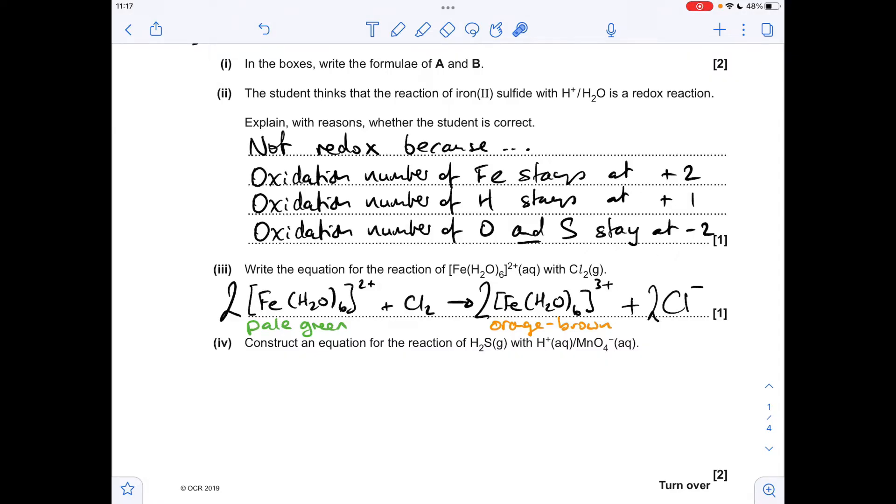So moving on to the next part of the question, we've got to construct this equation for the reaction between hydrogen sulfide and this acidified MnO4- ion. Now in my opinion, the easiest way to tackle this is to think about the two half equations taking place and then combine them so that the electrons disappear. So we'll start with the hydrogen sulfide half equation. We're told we get this yellow solid, well that's elemental sulfur.